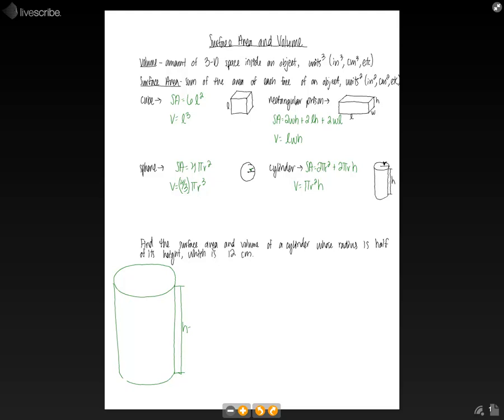So let's draw a picture here. And we have some height, which it tells us is 12 centimeters. And then we have a radius, R. And so it tells us that the radius is one half of the height. So in this case, our radius will be half of the 12 centimeters or 6 centimeters.